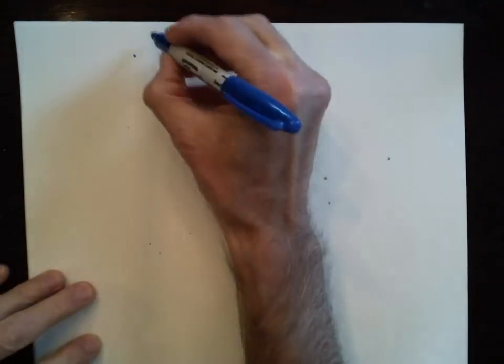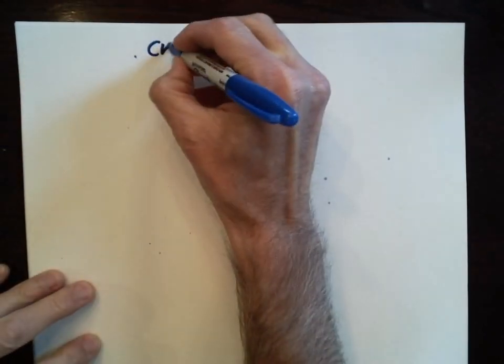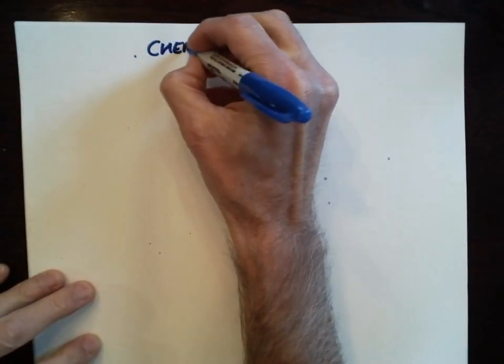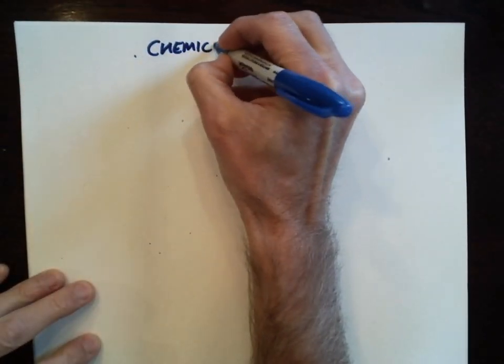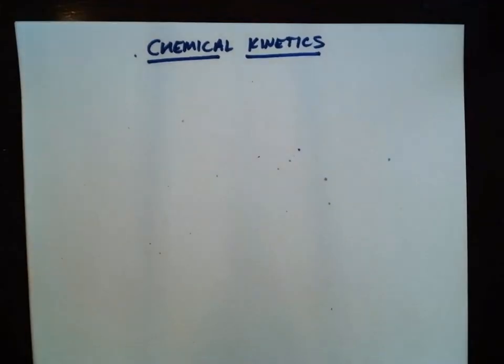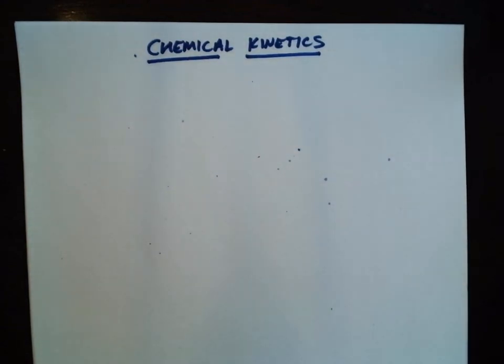Let's begin our discussion of chemical kinetics. Chemical kinetics is the study of how fast chemical reactions go.